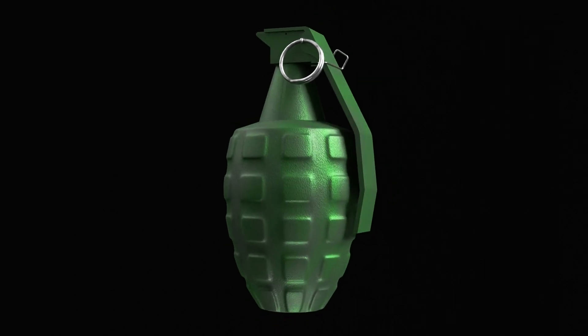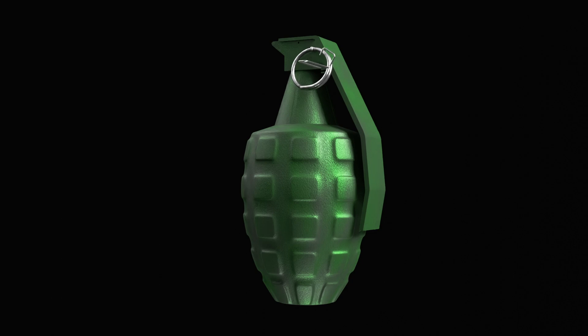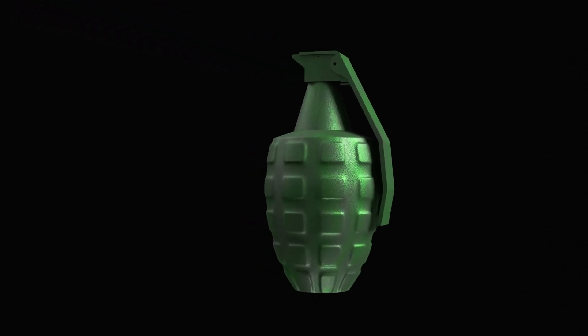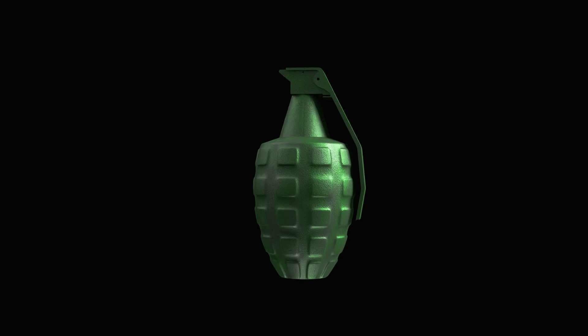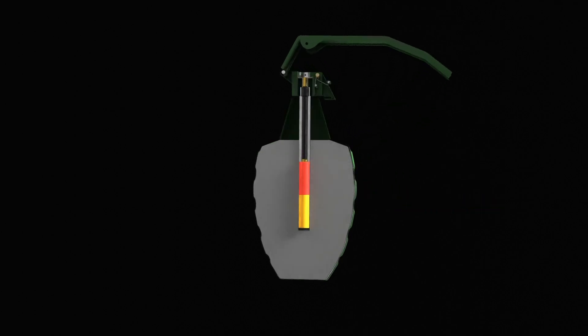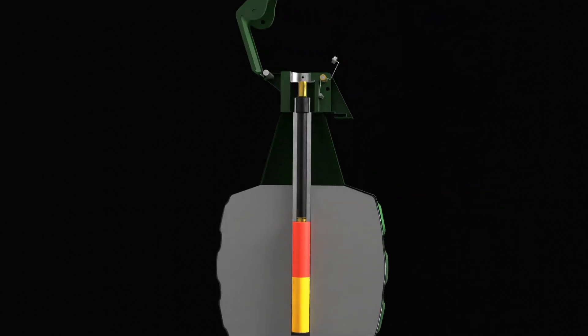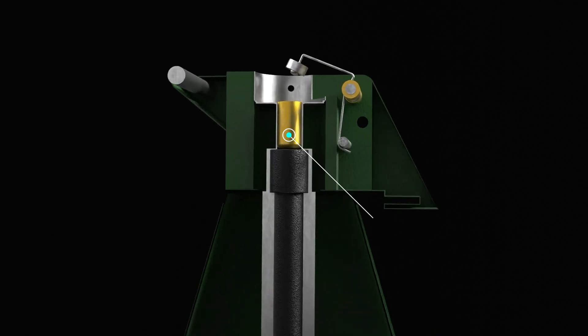When the safety clip is released and the safety pin is removed, the safety lever is set free. This marks the moment when the grenade becomes armed and primed for action. If the safety lever is pressed, the grenade will not explode. When pressure on the safety lever is released, the striker, urged by the striker spring, rotates on its axis, dislodging the safety lever and hitting the primer.